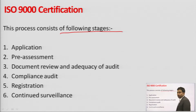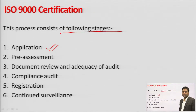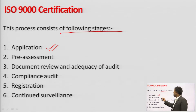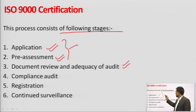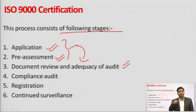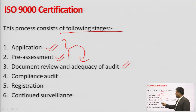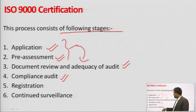ISO 9000 certification process consists of several stages: application — what the product is and its uses must be properly mentioned; pre-assessment — documentation process must be shown; documentation review and audit — previous documents must be audited multiple times, with changes suggested and adopted in the next version.